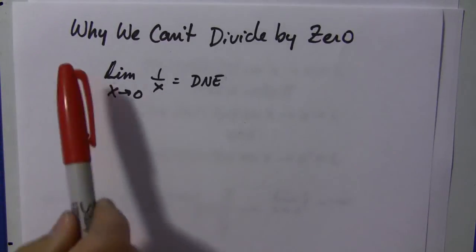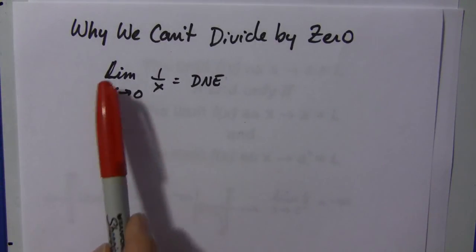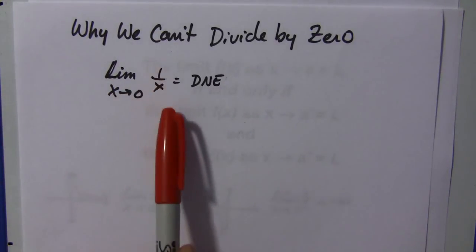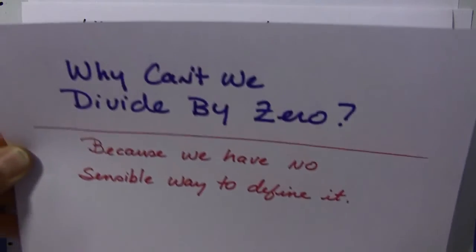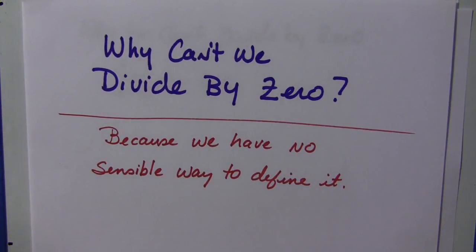And this could be written. Now, why we can't divide by zero is because the limit as x goes to zero of 1 over x, that limit does not exist. So, we're back to page one, if you will. Why can't we divide by zero? Because we have no sensible way to define it. I hope this helps. Thanks for watching.